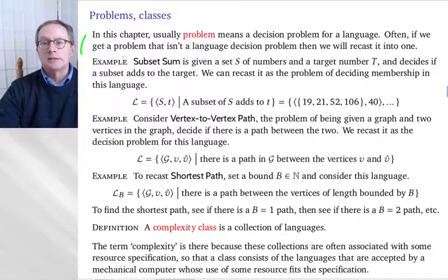So, for example, we did lots of examples of problems, and one of the reasons is so that I could quote them here. Subset sum is given a set of numbers and a target number, and decides if some subset adds to that target. So, for example, you might be given 100 numbers, and a target is 708, and asked, can you find a subset of the 100 that adds to 708? Now, as stated, that's not a language decision problem. So, instead, I can recast it as a language decision problem as the pair S, T, where a subset of S adds to T. And some examples might be 19, 21, 52, 106, 40. And I can ask the question, is there a subset of the set that adds to 40? And, of course, the first two add to 40, so the answer is yes. So, this is a member of that set.